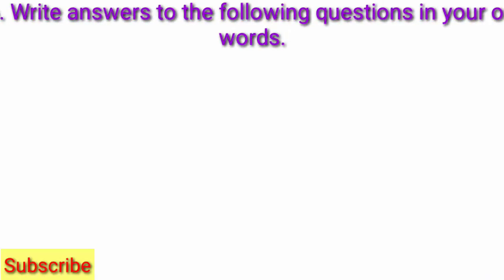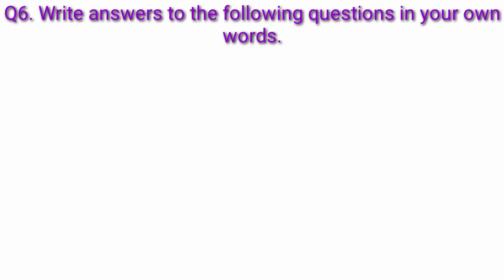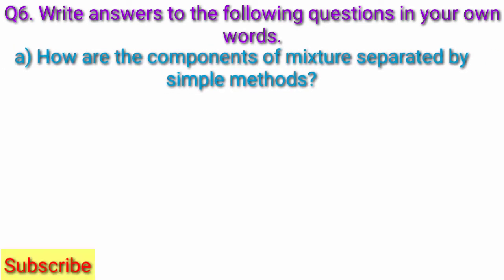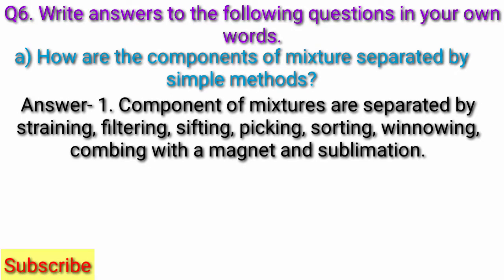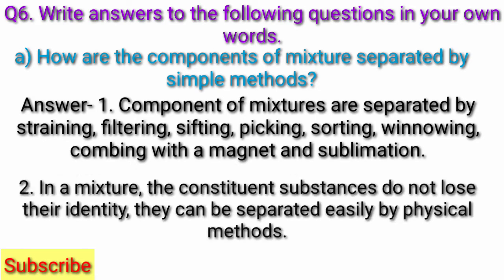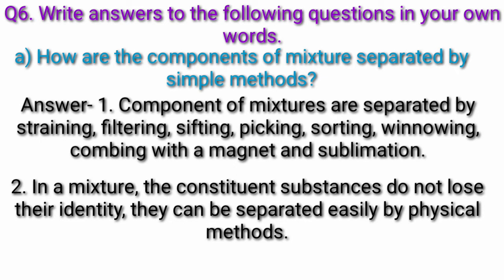Question 6: Write answers to the following questions in your own words. Question A: How are the components of a mixture separated by simple methods? Answer. Components of mixtures are separated by straining, filtering, sifting, picking, sorting, winnowing, combining with a magnet, and sublimation. In a mixture, the constituent substances do not lose their identity. They can be separated easily by physical methods.